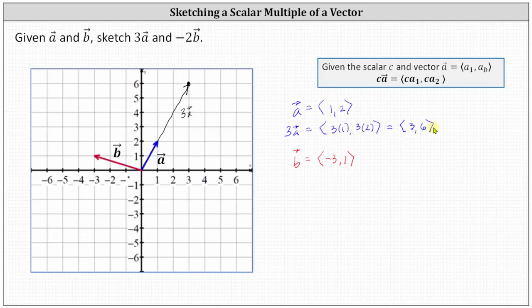Now let's sketch the vector negative two times vector b. This vector will have twice the magnitude of vector b, but because of the negative, it will point in the opposite direction. Graphically, instead of moving left three and up one twice, we move right three and down one twice — starting at the origin: right three down one, right three down one. This is the terminal point of the vector negative two times vector b.